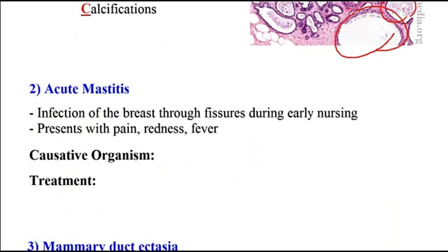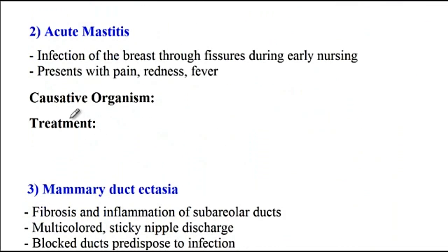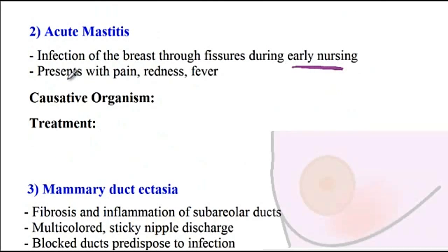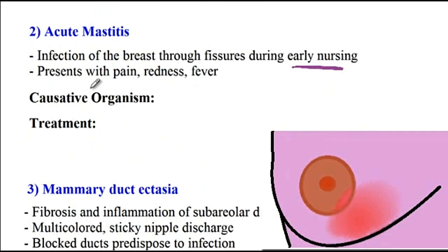Moving on to acute mastitis — this is an infection of the breast occurring through fissures during early nursing. These patients generally present with breast pain, redness, and fever. The most common infectious organism is Staphylococcus aureus.